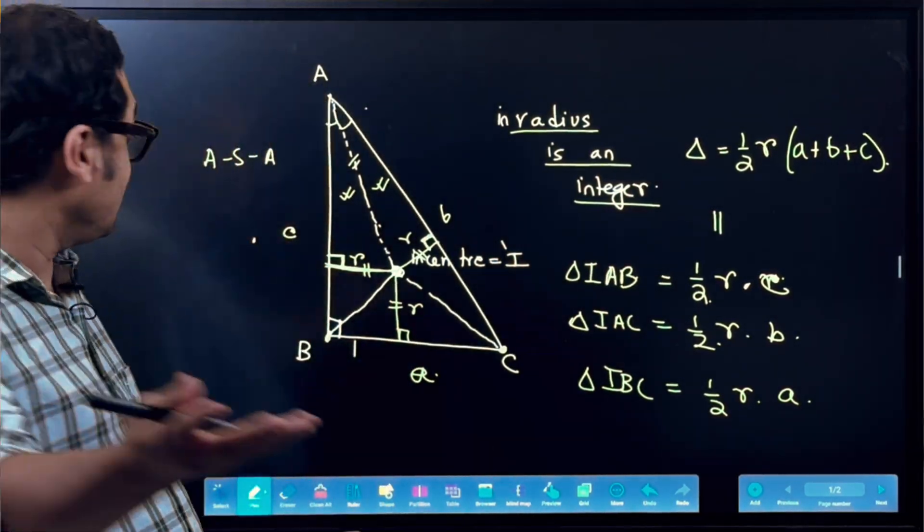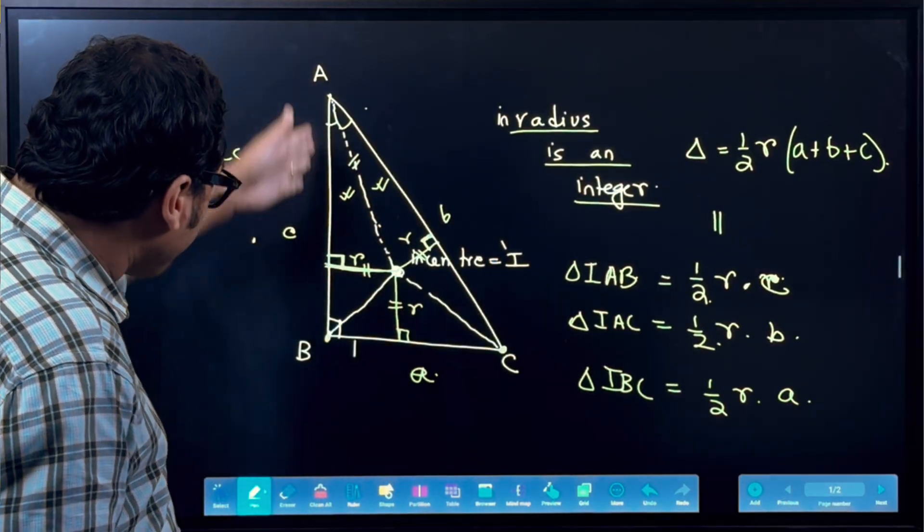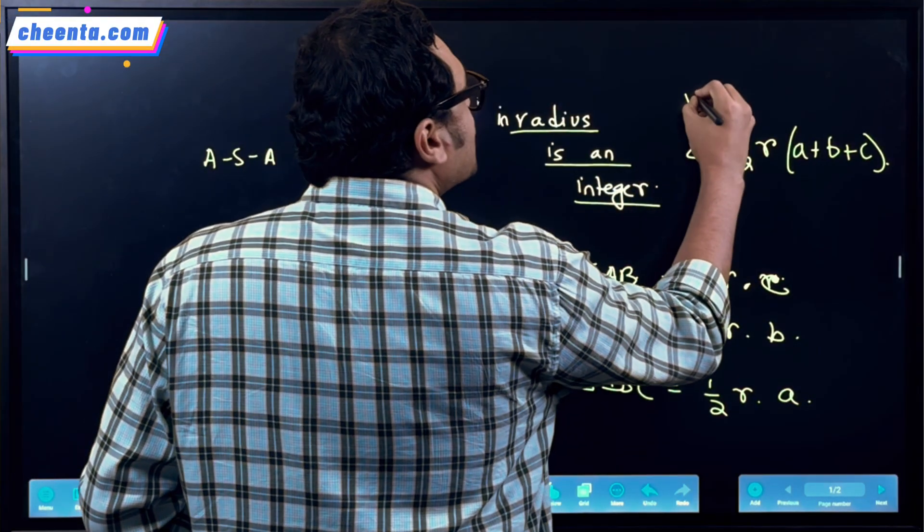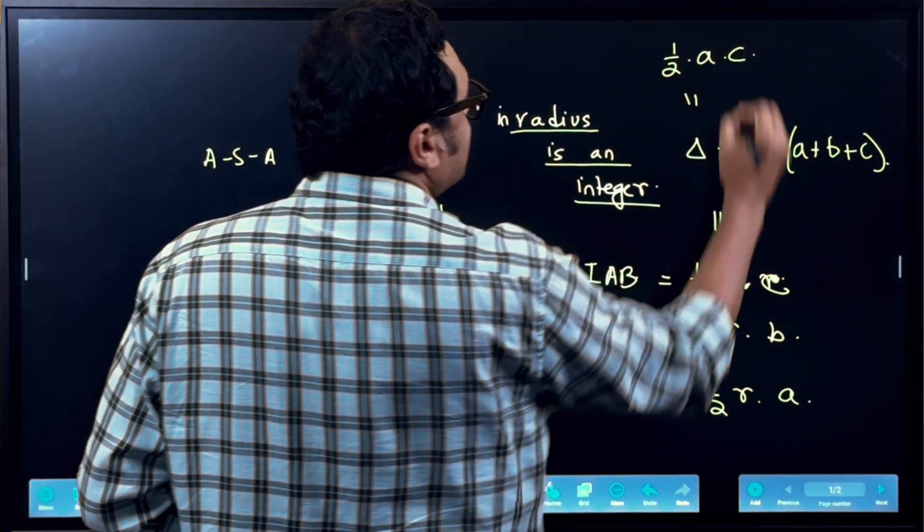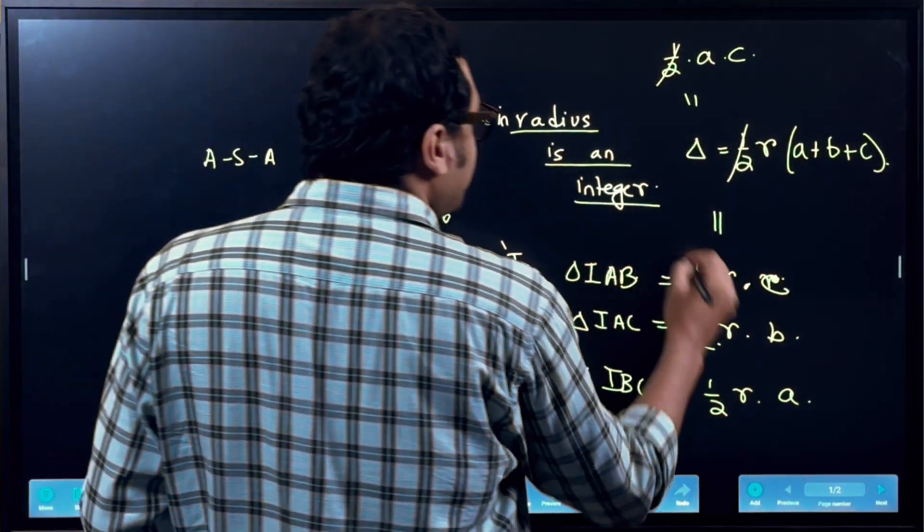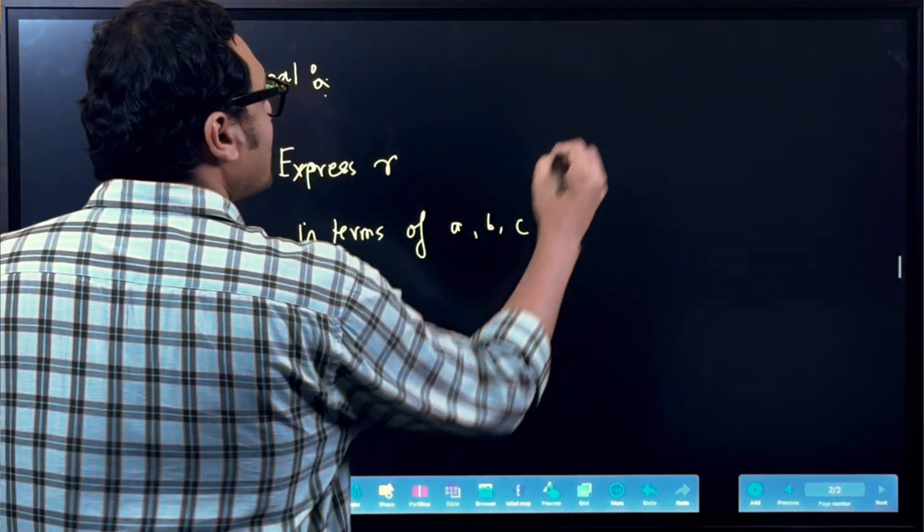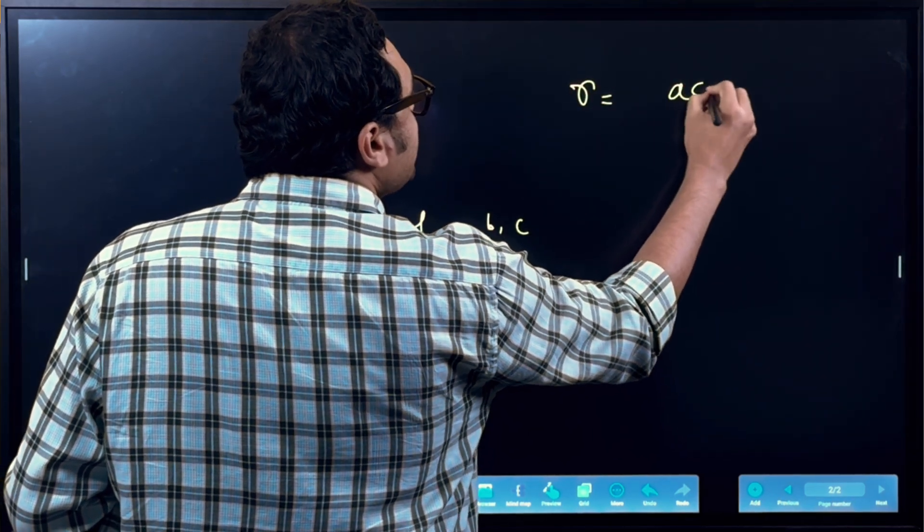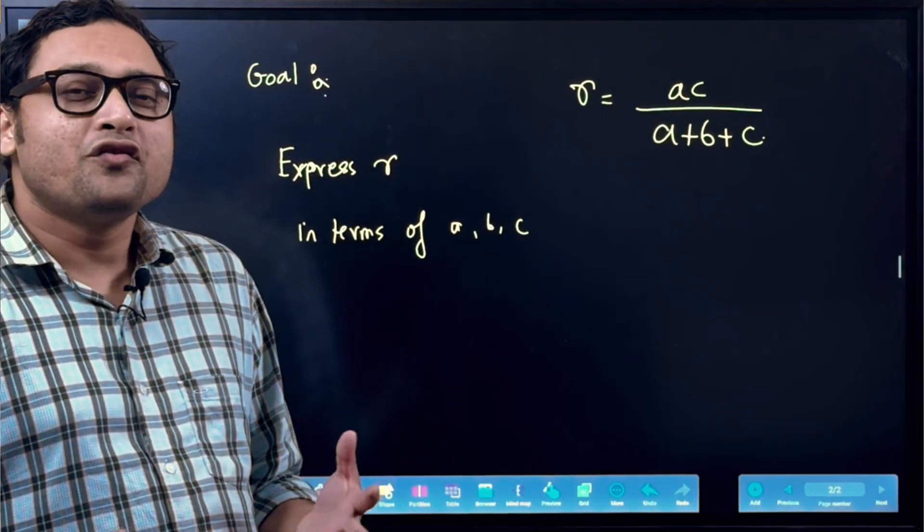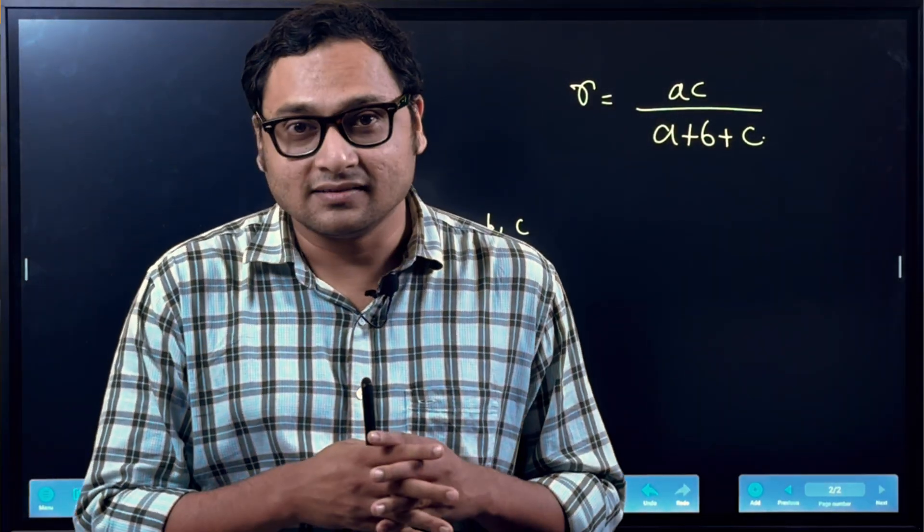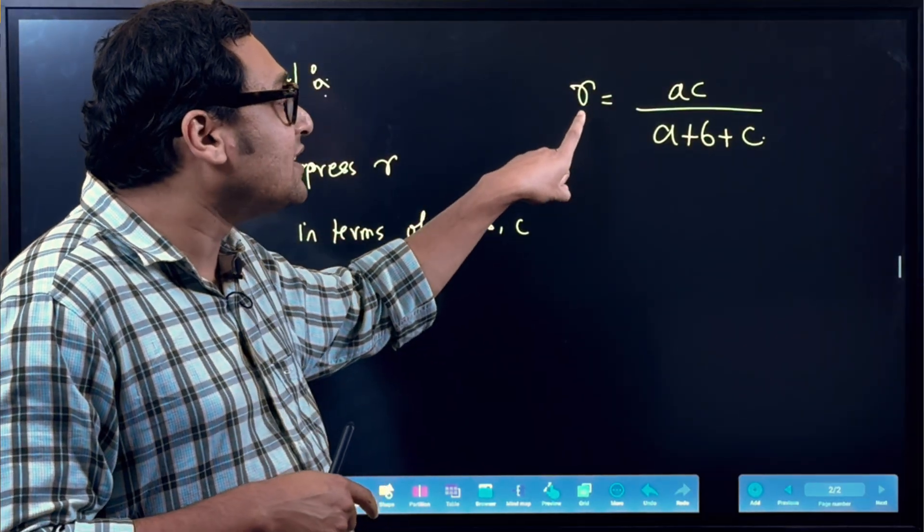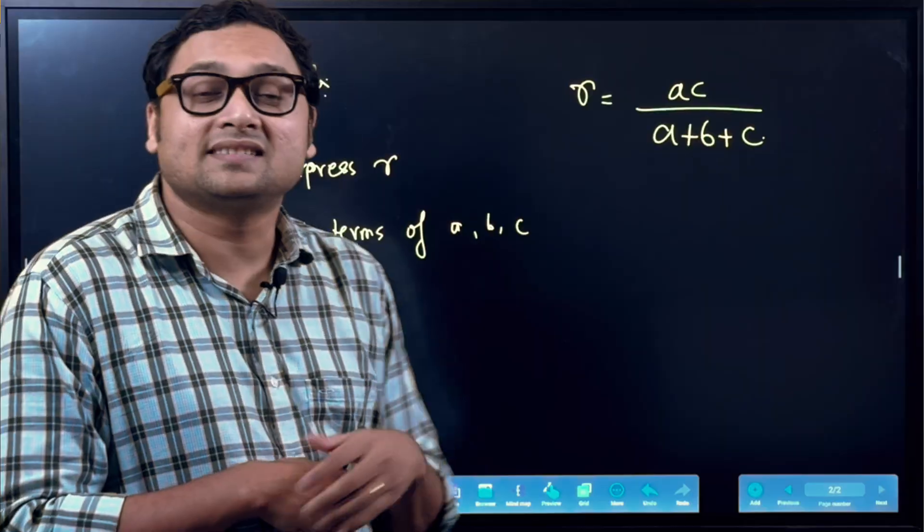But it's a right triangle. So it's also half times A into C. A is the base, C is the height. So this is also half times A into C. So I can cancel out the half. So I have r equals to AC over A plus B plus C. This is true for any right triangle. What's awesome about it is that I have expressed the in-radius in terms of the sides of the triangle.